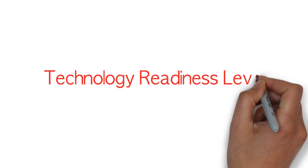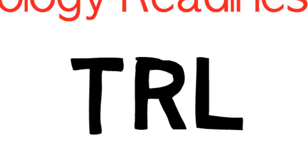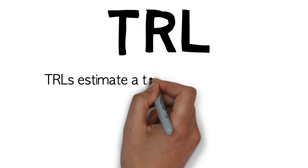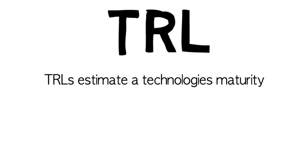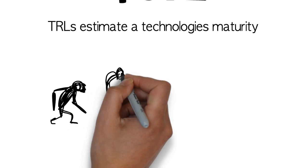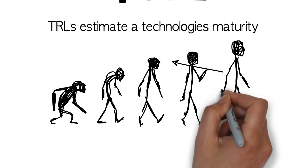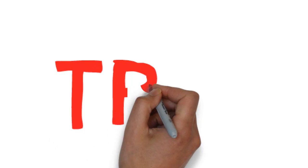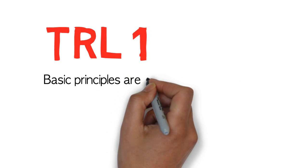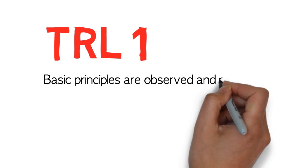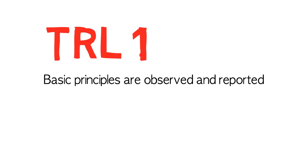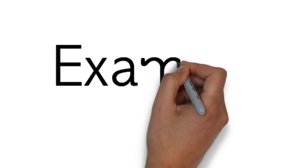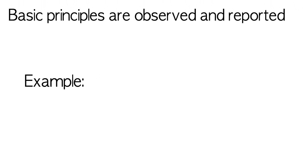Technology Readiness Levels are a method of estimating a technology's maturity. So, what are the TRLs? TRL 1: The basic principles are observed and reported. To help you understand in simple terms, I'll use the example of a tyre.